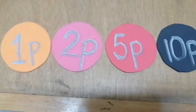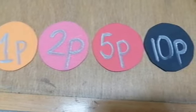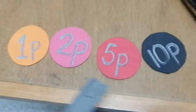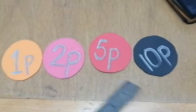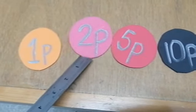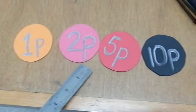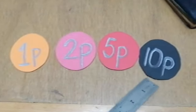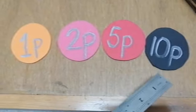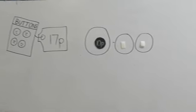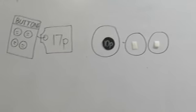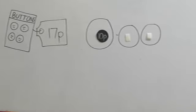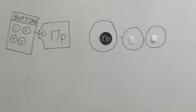Now we will search which is the biggest coin we have. In me se sabse bada coin humare paas kaun sa hai? Is 1 sabse bada hai, ya 2, ya phir 5 paisa? Very good — humare paas sabse bada coin 10 paisa ka hai. Now we can use the 10 paisa coin, but abhi bhi kuch paisa rehte hain. 17 minus 10 karo — kitni cost baki reh gayi hai?